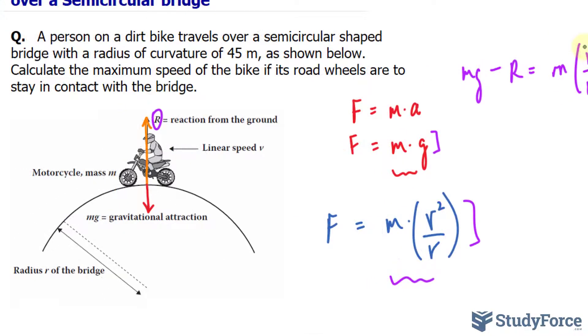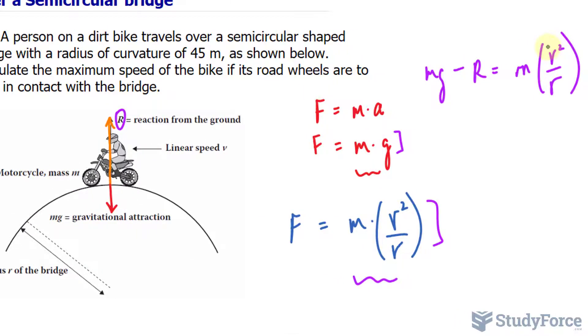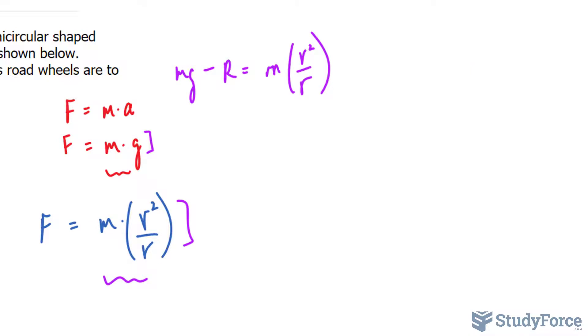Now before I continue, if this bike were to speed up, it would eventually lift off from this semicircular surface. And if it's lifting off from the semicircular surface, then r becomes zero because the ground is no longer pushing up against the bike. So let's assume that we maximize v to a point where r becomes zero. That being said, r becomes zero in this case, and we have mg = mv²/r.